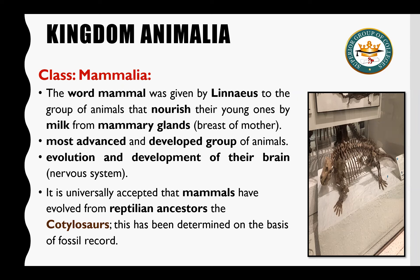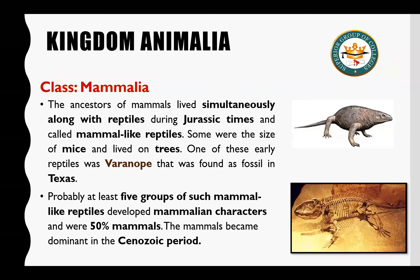It is universally accepted that mammals have evolved from reptilian ancestors — the cotylosaurs. Cotylosaurs were reptilian ancestors from which mammals evolved, as evidenced by the fossil record. The ancestors of mammals lived simultaneously along with reptiles in Jurassic times, the time of dinosaurs. These were called mammal-like reptiles.